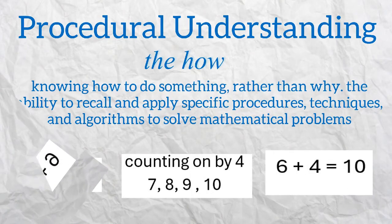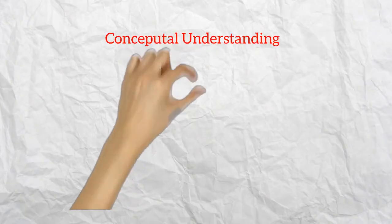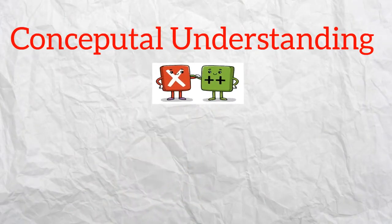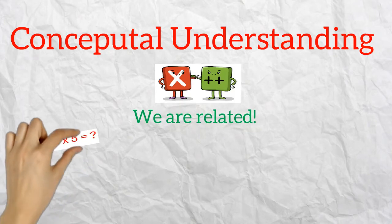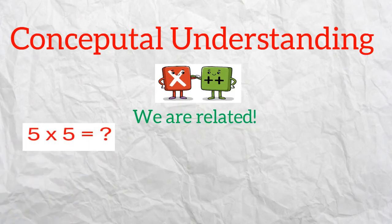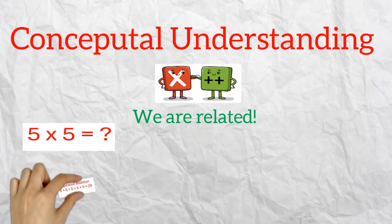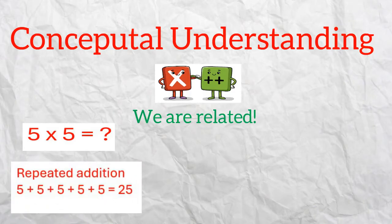Another example of conceptual understanding in math is knowing that multiplication is repeated addition, seeing the connection or relationship between multiplication and addition. If I want to know the product of 5 times 5, I can add 5 groups of 5: 5, 10, 15, 20, 25.